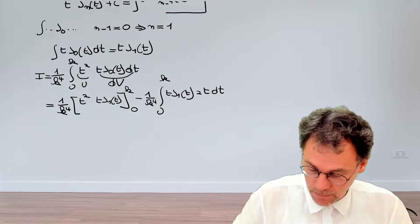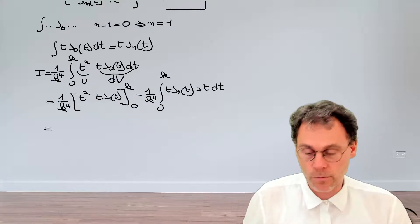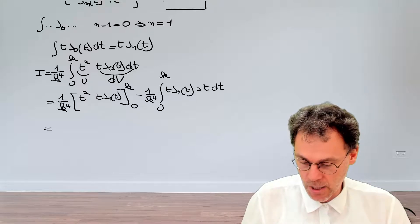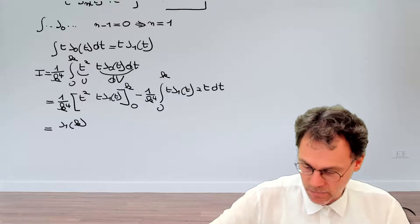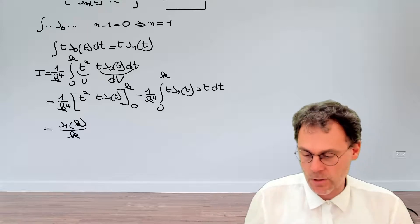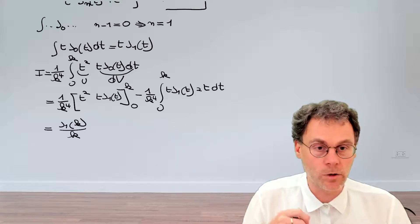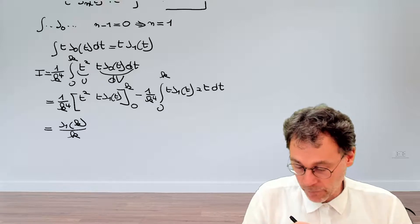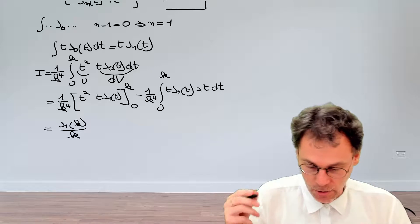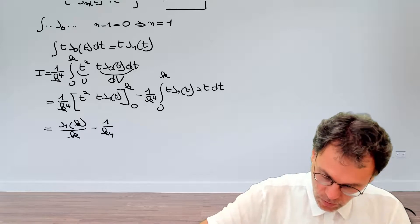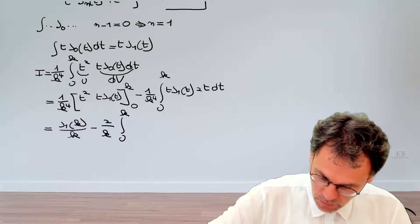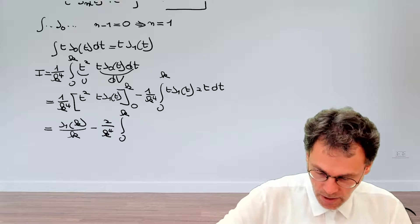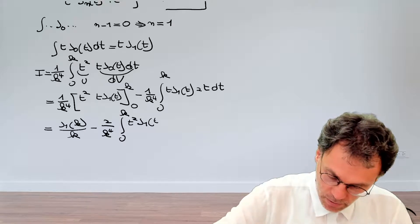You might wonder where this is leading because it doesn't seem like we have solved the problem. But let's just be patient. First of all, we can simplify things a bit more here. For our upper bound, if we replace k here, then we get J_1(k) divided by k, because we have k^3 divided by k^4. And then for the lower bound, it's basically 0, so that just vanishes. And then let's clean this up: we have 2 divided by k^4, and then we have t^2 J_1(t) dt.